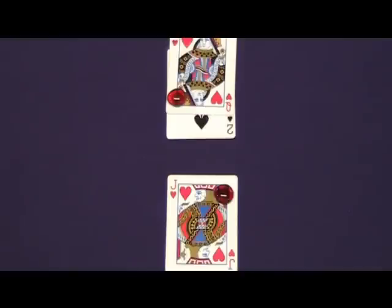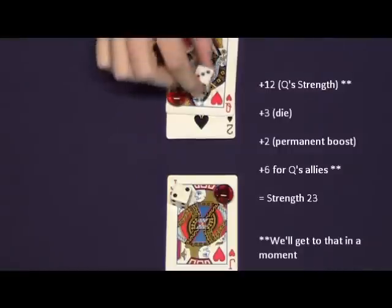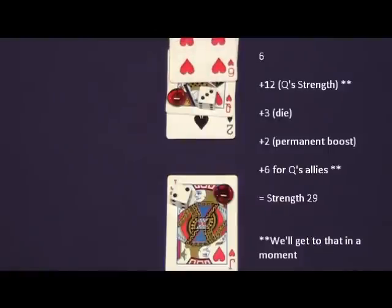A duel begins with each player adding a six-sided die to their noble strength. The attacker then may play a card from their hand. If the suit matches the suit of the noble they're playing the card on, then there's an additional plus two bonus on top of the value of the card. At this point, the defender may also play a card.